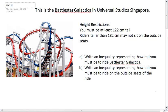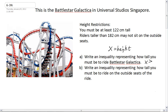I'm going to ask two questions. First, let's write an inequality representing how tall you must be to ride Battlestar Galactica. Most people are okay with this one — it's pretty straightforward. We'll say x equals our height. We need our height to be at least 122 centimeters. 'At least' means it could equal 122 or be more, so x is greater than or equal to 122 centimeters.